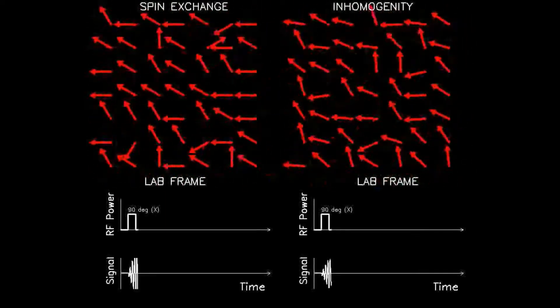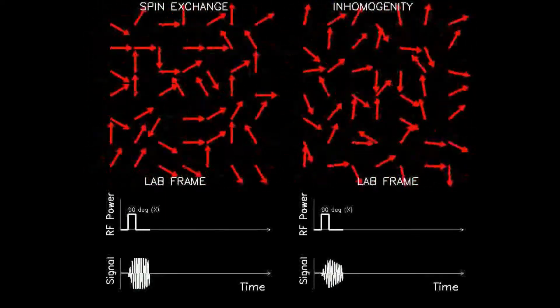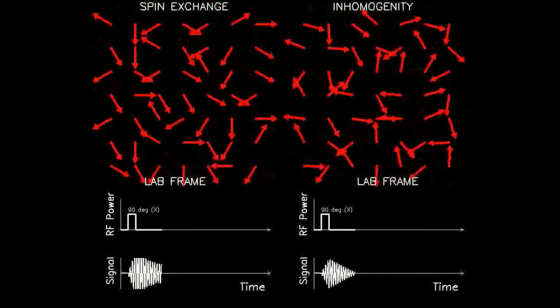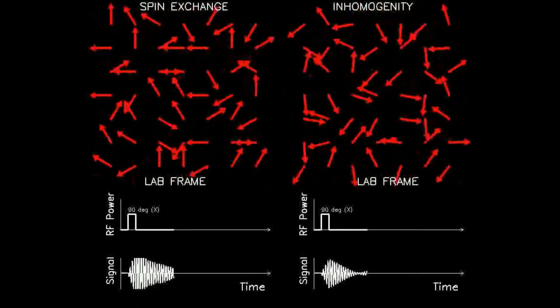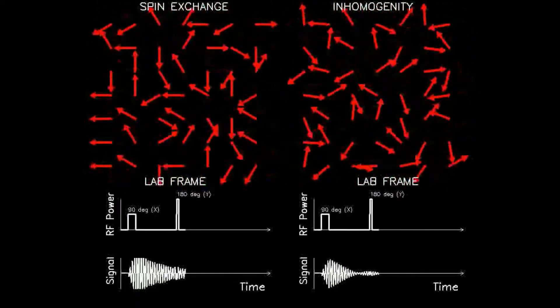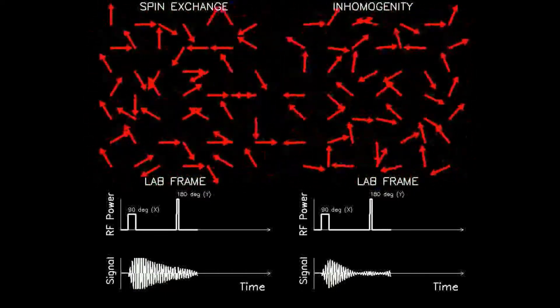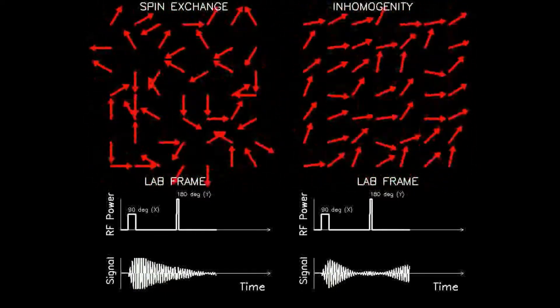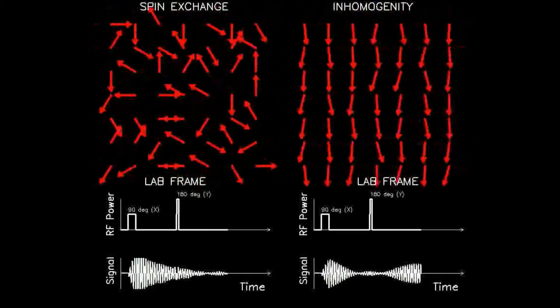Back to this animation. This process only works if the spins were advanced due to magnetic field inhomogeneities and not due to spin-spin coupling. That is why we would display two different decay mechanisms, spin-spin dephasing on the left side and inhomogeneity dephasing on the right side.